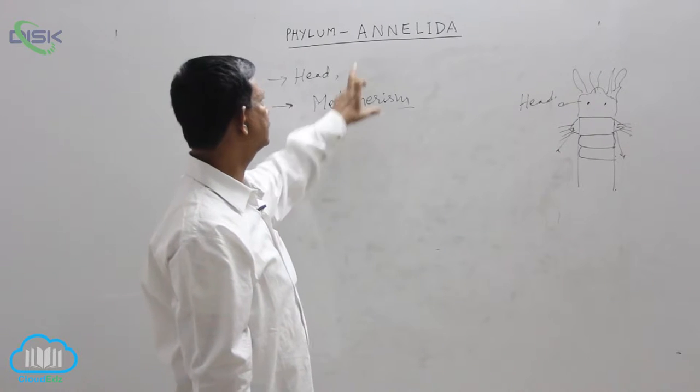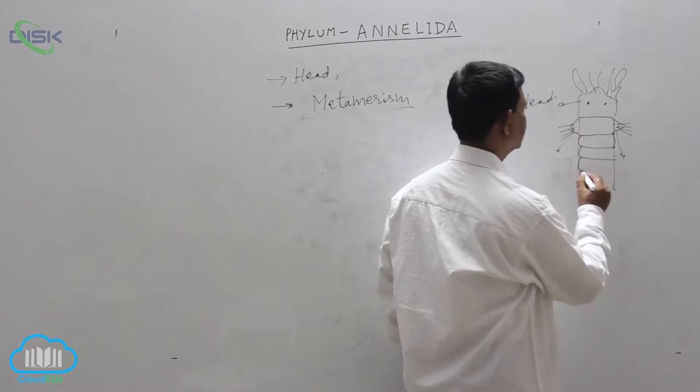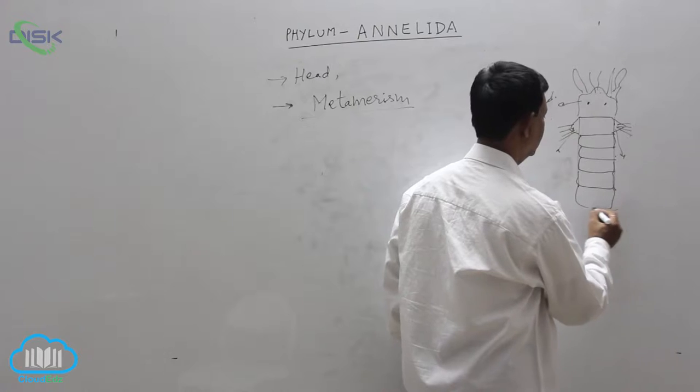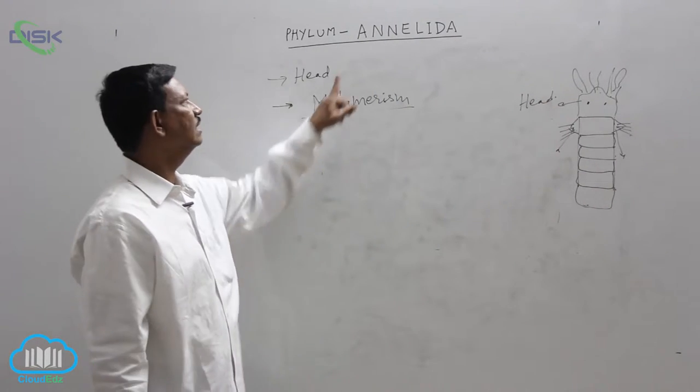Proust's segmentation is present in the phylum that is known as metamerism. Different types of segments are present in the body. Due to the presence of this character the phylum name is derived as annelida.